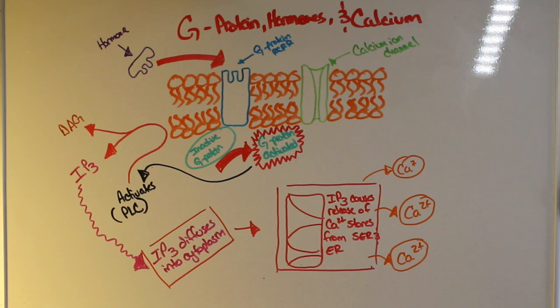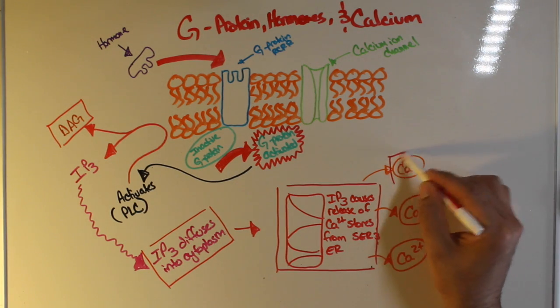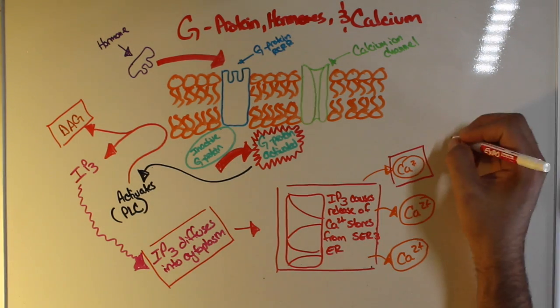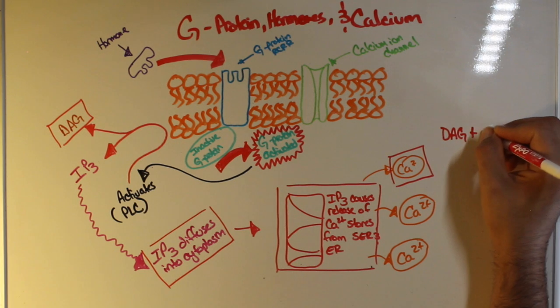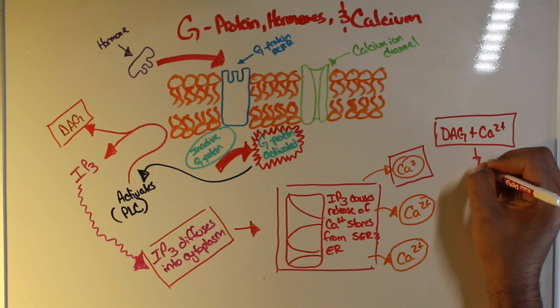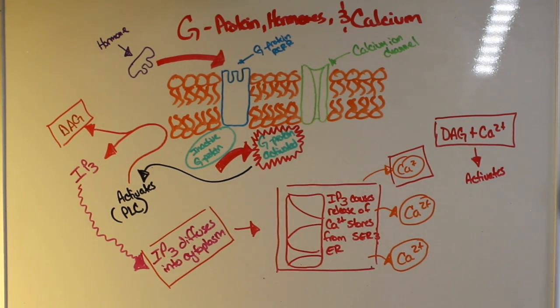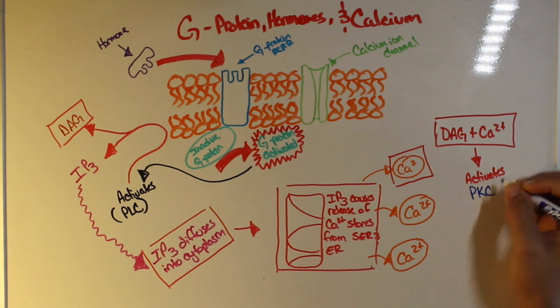Now this is a very important step here. Because once the intracellular calcium levels are increased, DAG and calcium will bind. This in turn activates PKC. Now PKC is phosphokinase C, another enzyme.